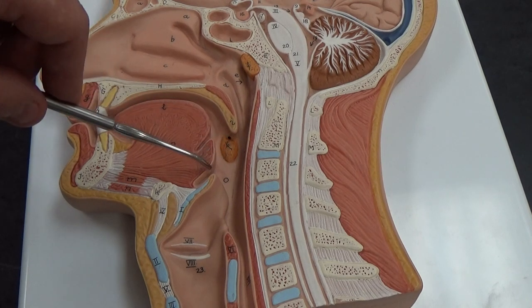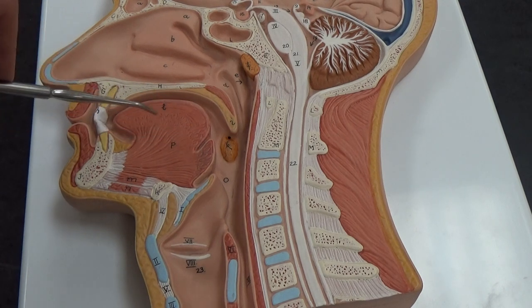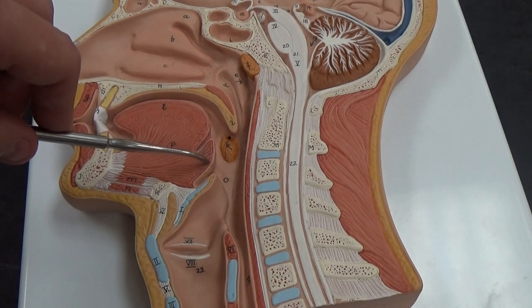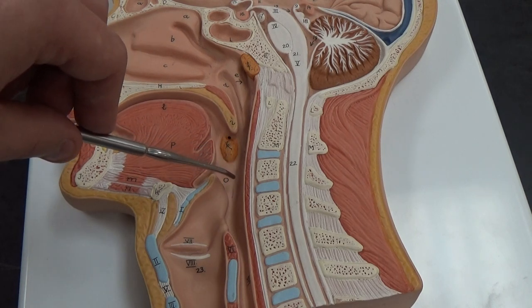The lingual tonsil is at the base of the tongue, so this is your tongue, lingual tonsil. Oropharynx is this region right here.